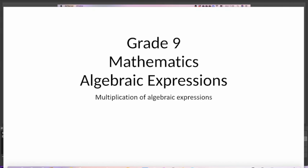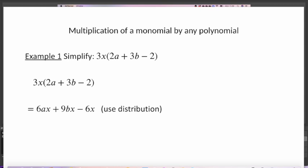Here's one example: we are multiplying a monomial expression by a polynomial expression. In this example, please take note that 3x is a monomial expression because it is just an expression with one term — mono means one. And 2a + 3b - 2 is more than one term.